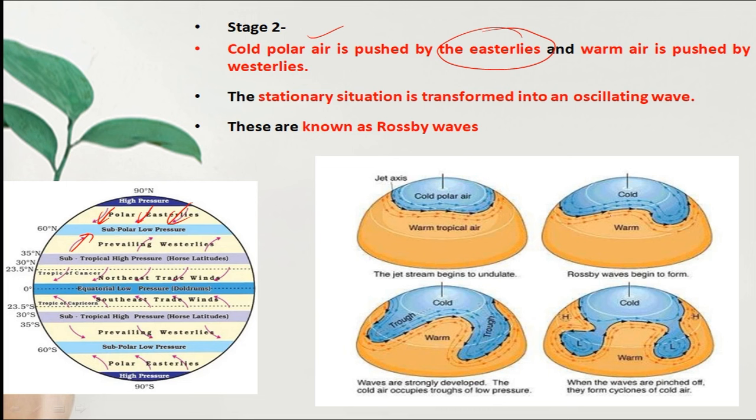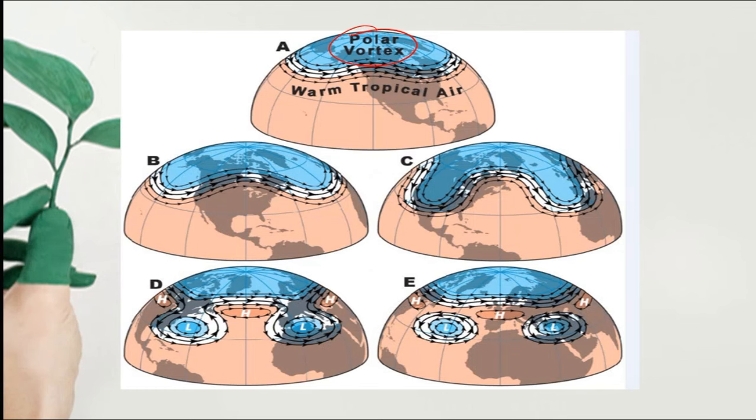The polar easterly will push cold air south, and the tropical westerlies will push warm air north. This creates troughs and ridges, with warm air pushed north and cold air pushed south.